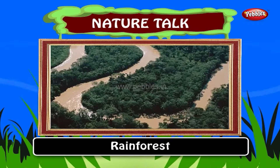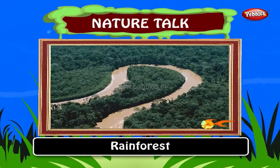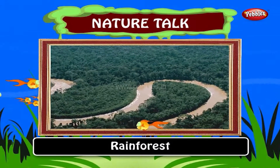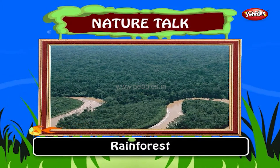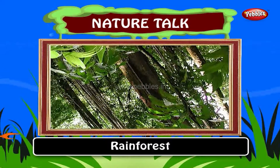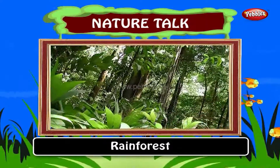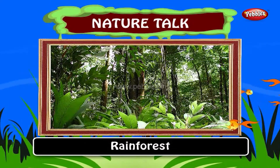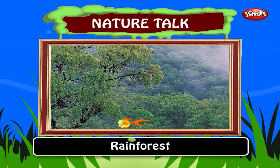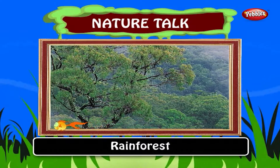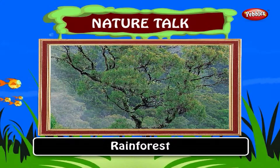Rainforests are found in warm tropics. The Amazon rainforest in the heart of Brazil, South America, is the world's biggest rainforest. From 40 to 75% of all species on Earth are native to the rainforests. Rainforests are characterized by high rainfall, with minimum normal annual rainfall between 1,750 to 2,000 millimeters.